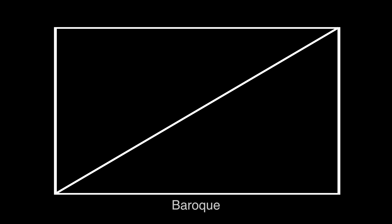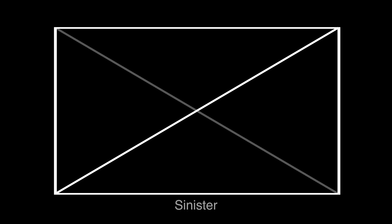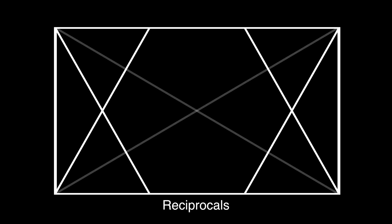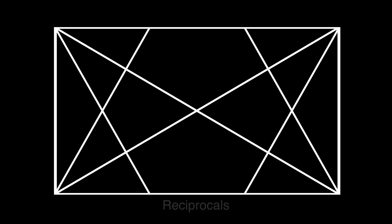Now in any rectangle you can draw these following lines. This is the baroque diagonal and its opposite is the sinister diagonal. You can divide the frame horizontally and vertically, and then add the reciprocals, which are perpendicular lines to the baroque and sinister diagonals.